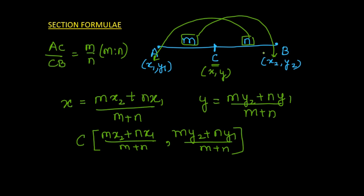Always remember: whenever such questions come, please draw a line, write the coordinates, and the ratio on one side will be multiplied to the x and y coordinate on the opposite side, and the ratio on the other side will be multiplied to the x and y coordinate on its opposite side.